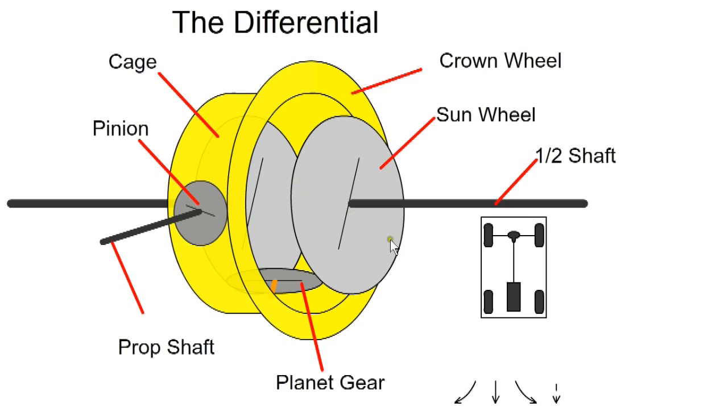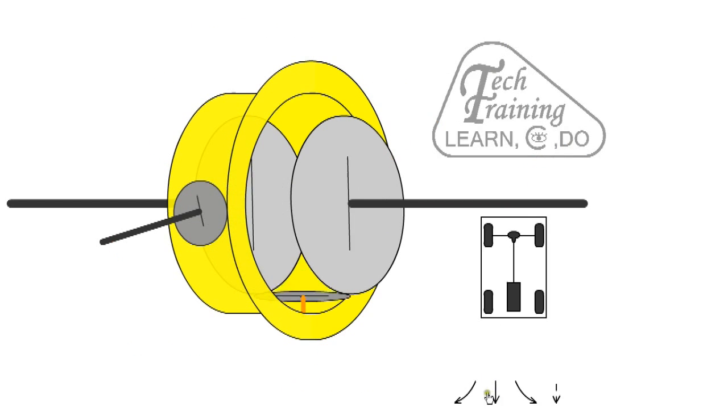When the car drives in a straight line, the input pinion rotates the crown wheel. The planet gear revolves with the cage but does not spin. The planet wheel, in turn, rotates both sun wheels at the same speed, transmitting power to the road wheels.